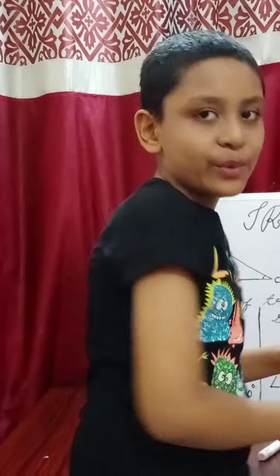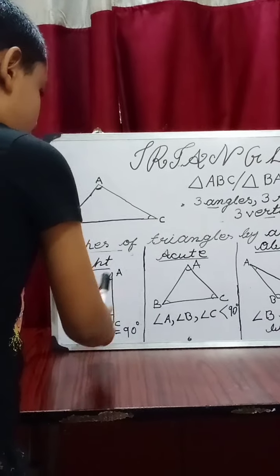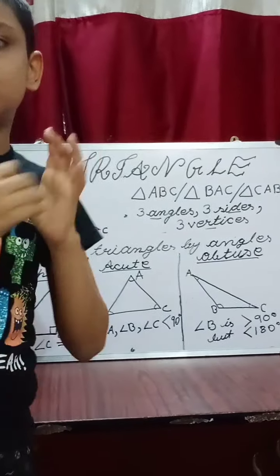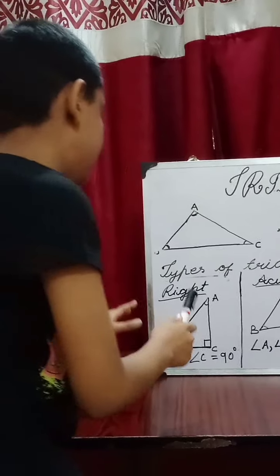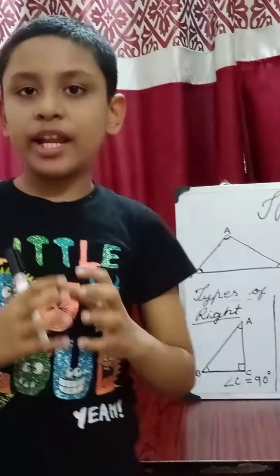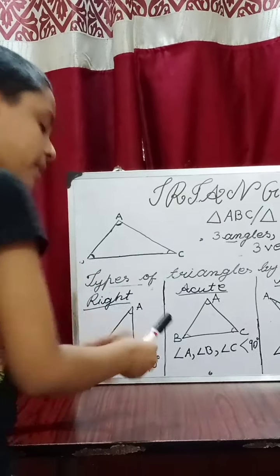Now there are three types of triangles by angles: right angle triangle, acute angle triangle, and obtuse triangle. In a right angle triangle, one of the angles is 90 degrees and the others are acute angles. In this figure, angle C is 90 degrees, which makes it a right angle triangle.